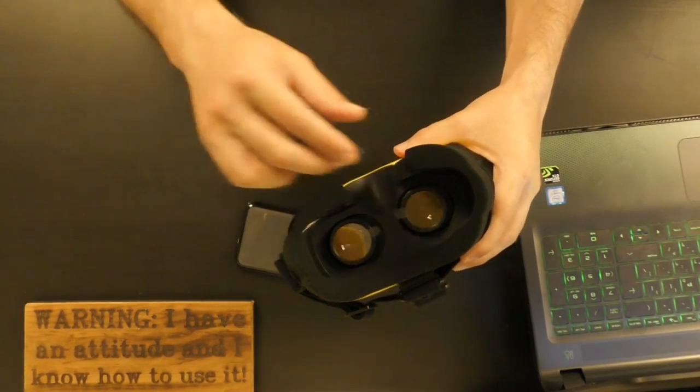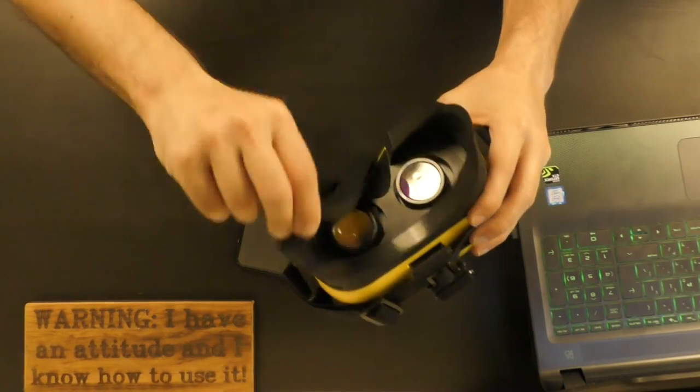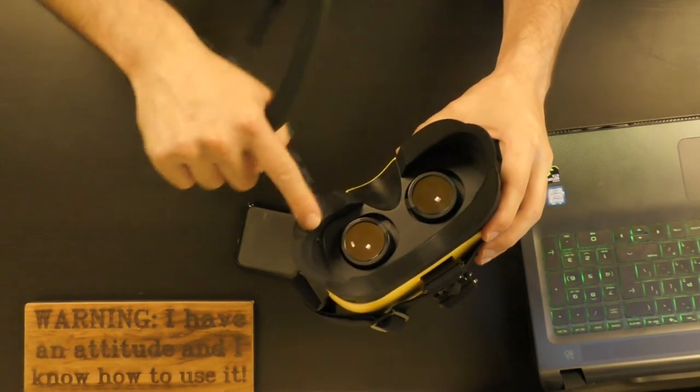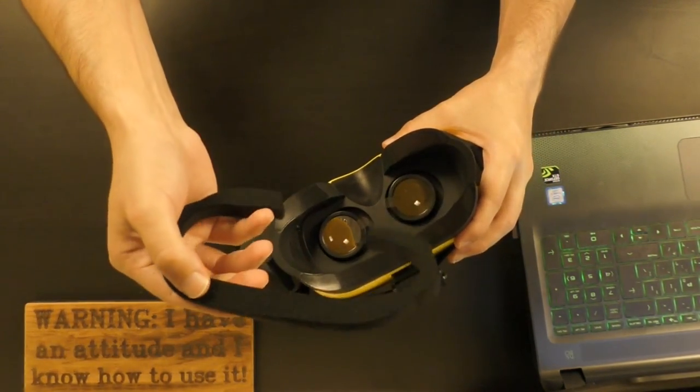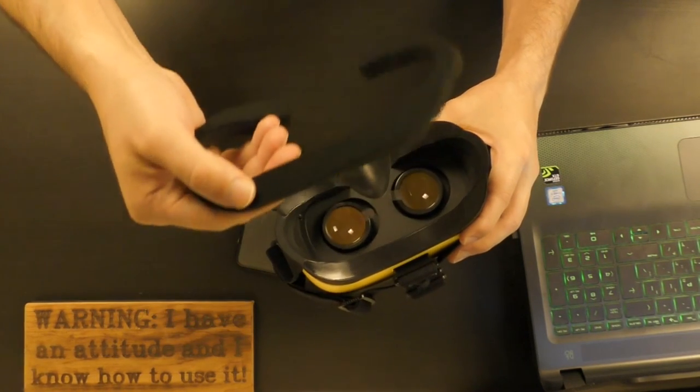While testing them, I noticed that you can take off this sponge. It has a velcro stripe here and over here. I guess when this thing gets stinky and sweaty, you can always wash it and then place it back.